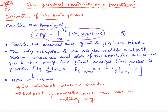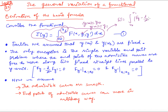We had this functional and the boundary conditions were specified. For example, we were given the value of y(x0) = y0 and the value of y(x1) = y1. So at these points, the value of the input functions was specified. In this case, the variation was δJ = integral from x0 to x1 of [fy − (d/dx)fy'] · h(x) dx, where h(x) is the increment function.